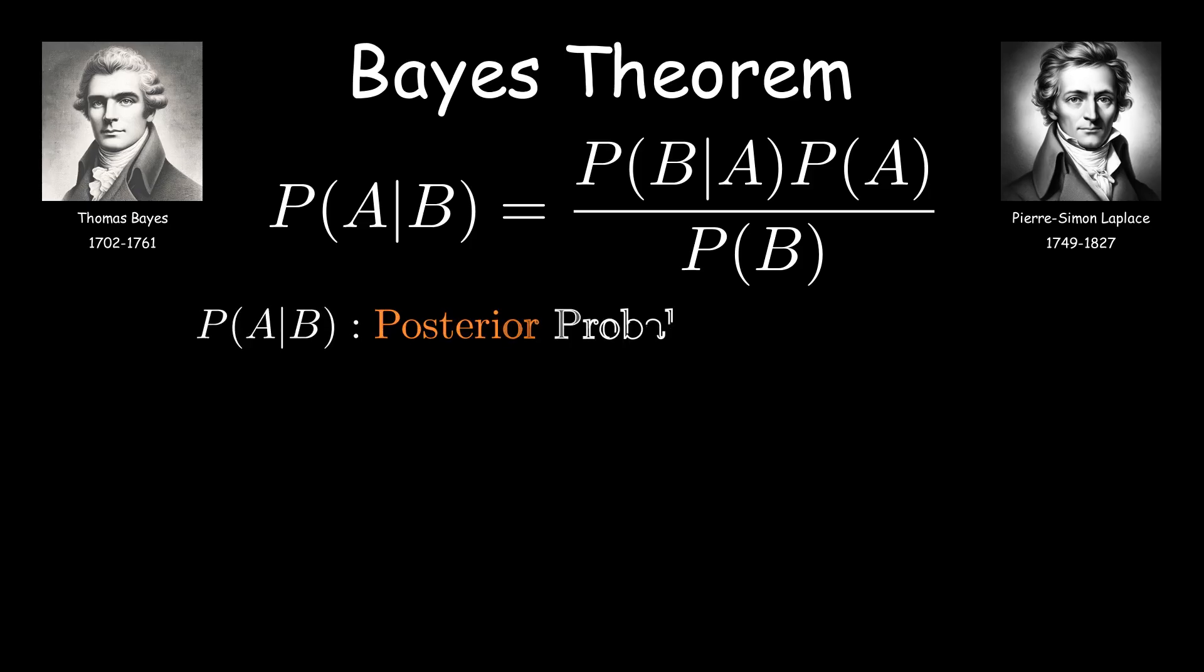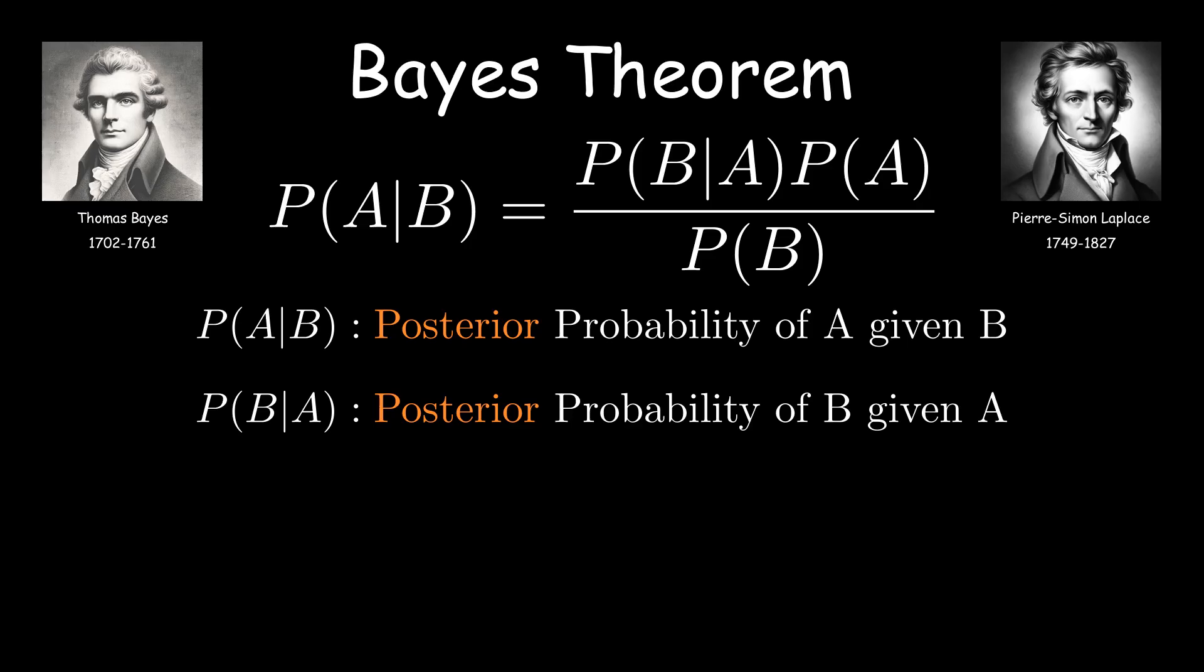Here P of A given B is called posterior probability because it is the probability of event A after event B has occurred. P of B given A is also the posterior probability because it is the probability of event B after A has occurred.